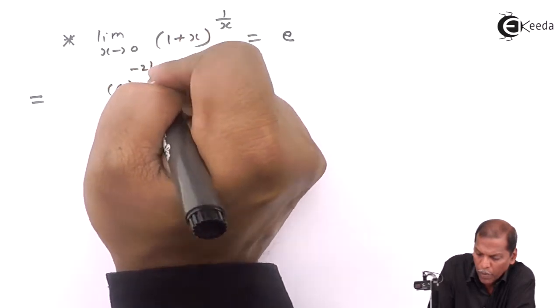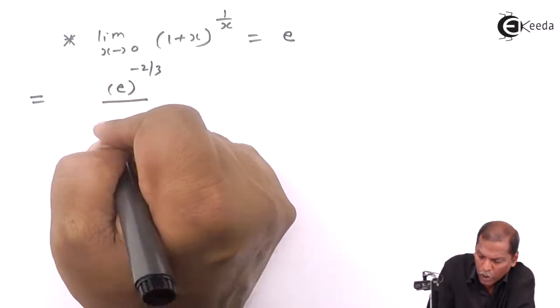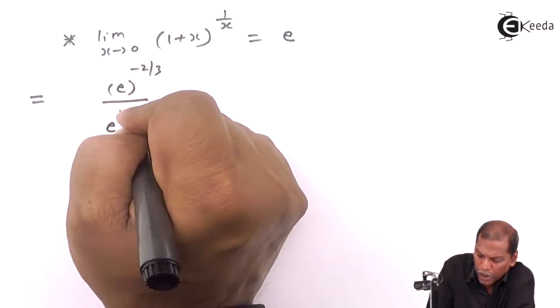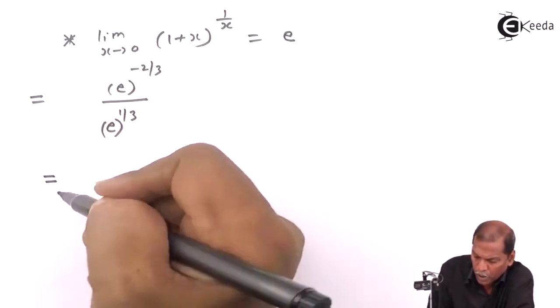This equals, now by applying indices rule, e raised to minus 2 by 3 minus 1 by 3.